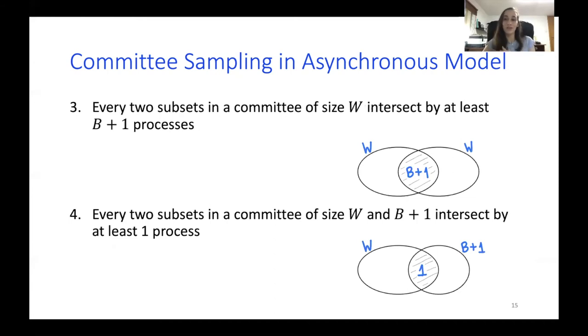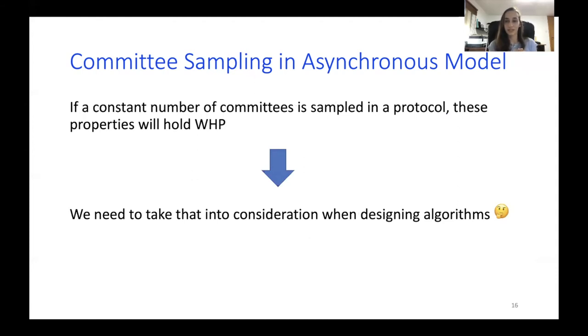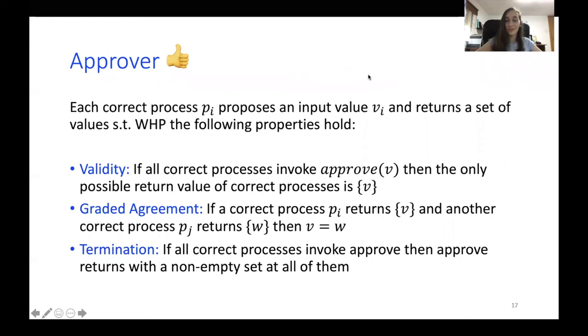So we overcome the liveness obstacle, but what about safety? We also need properties about quorum intersections. So we define another two properties. The first states that every two subsets of a committee of size w intersect by at least b plus one processes. So there is at least one correct process in the intersection and every two subsets in a committee of size w and b plus one are intersecting by at least one process. And one thing to take into consideration when designing algorithms that use committees is that we want to make sure that there is a constant number of committees in our protocol.